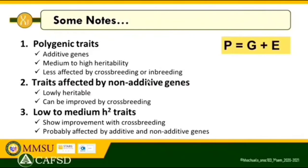Important notes to remember: polygenic traits are governed by many additive genes which contribute to their phenotypic expression. They have medium to high heritability — heritability is the portion of the phenotype attributable to the genotype. They are less affected by crossbreeding or inbreeding, which is why selection is the best tool for genetic improvement of polygenic traits rather than crossbreeding. Traits affected by non-additive genes are lowly heritable and can be improved by crossbreeding.